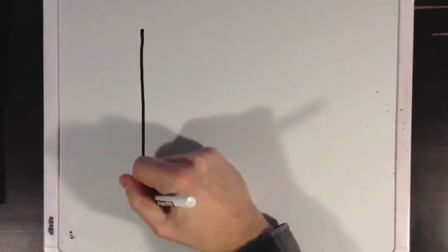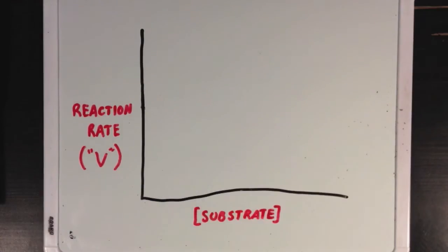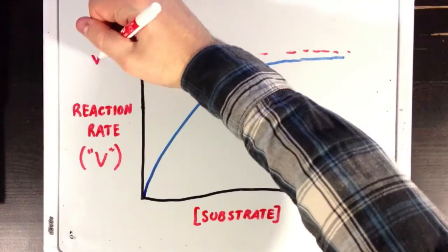If we were to look at a graph and plot the reaction rate V versus our concentration of substrate, we would see that as our substrate concentration gets really high, the rate would level off as it approaches our Vmax value.